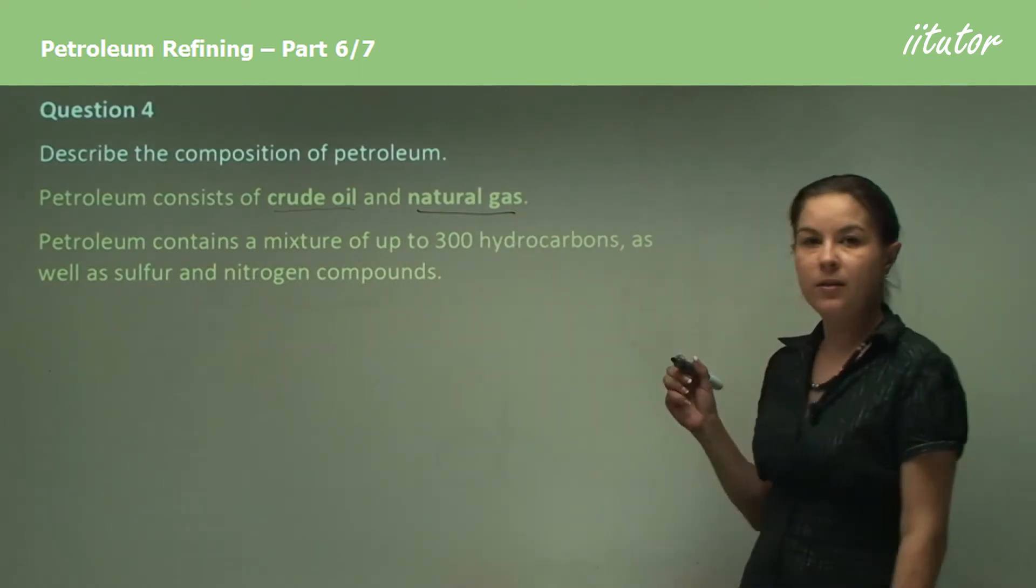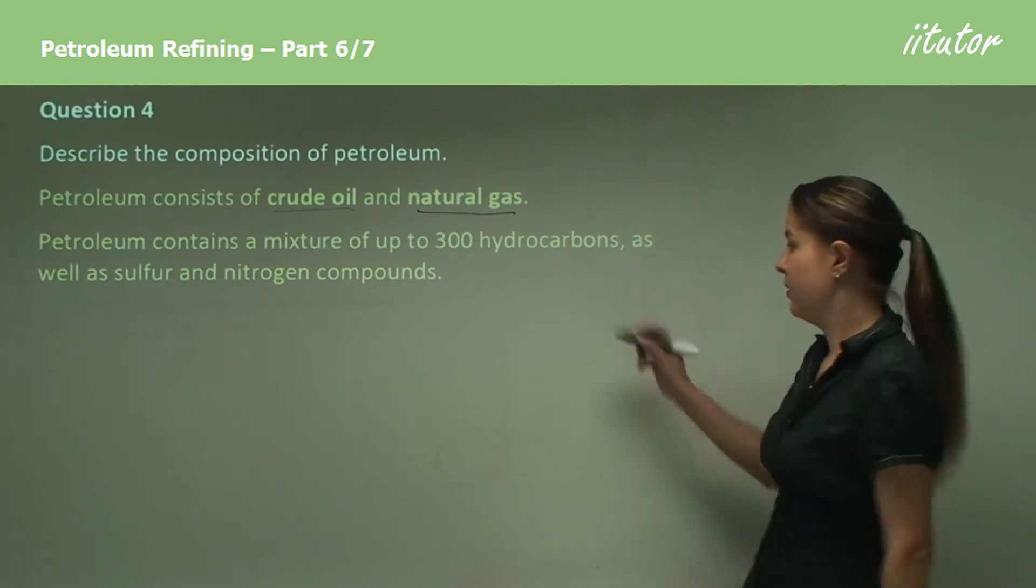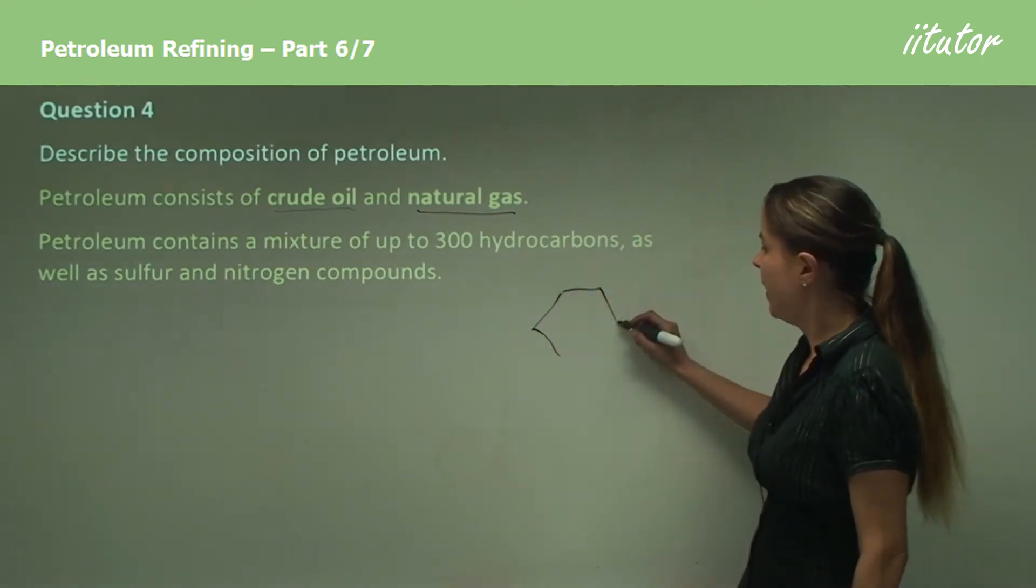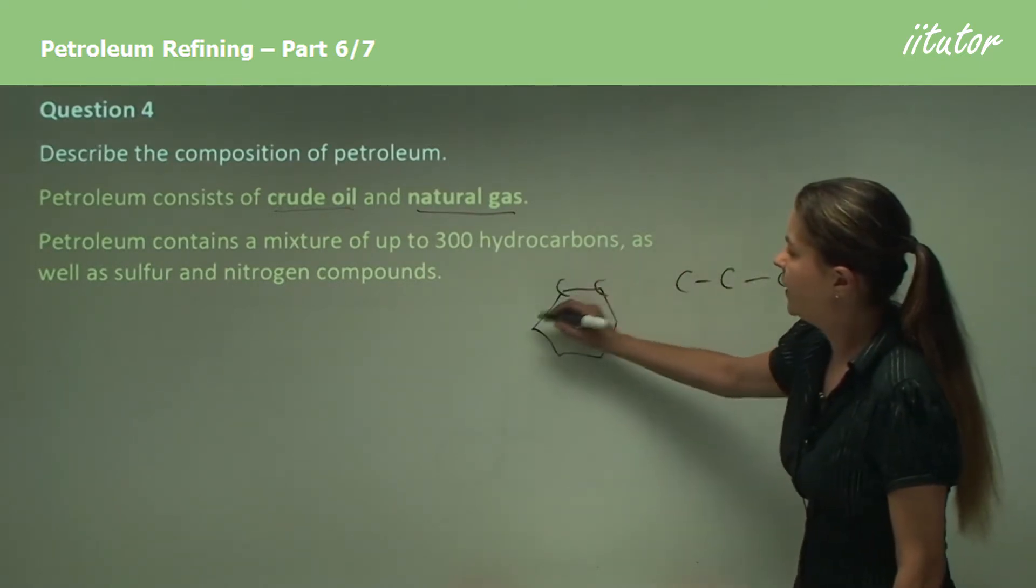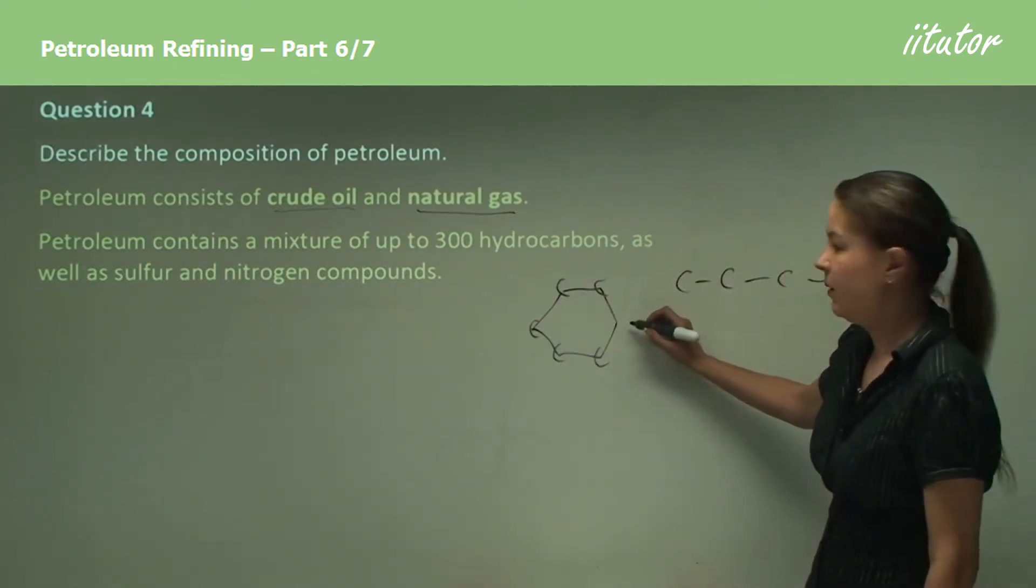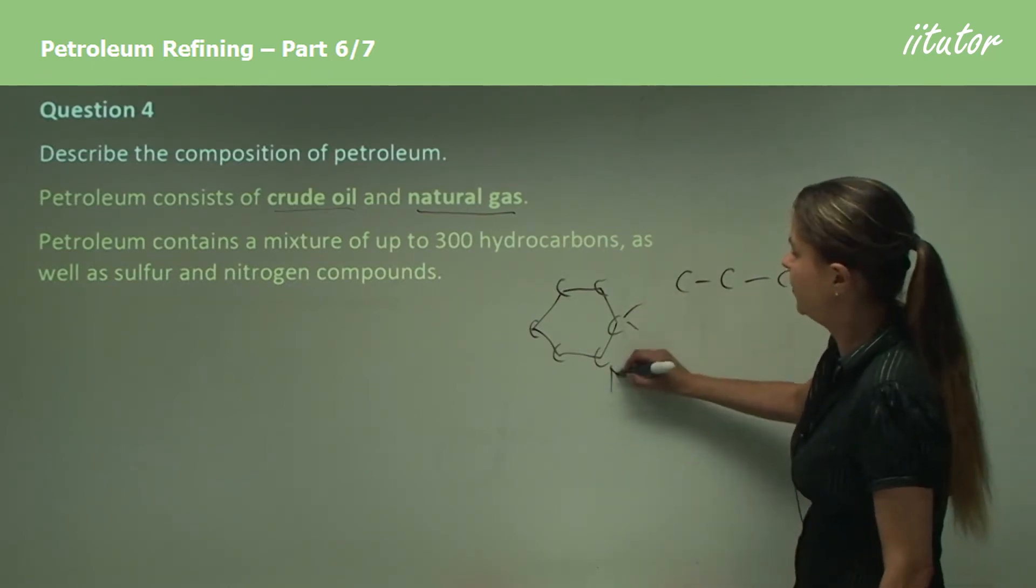And in these 300 hydrocarbons, it also contains what we call cycloalkanes, which are alkanes instead of being in a line like this, they're actually in rings, like this one here, which is a basic diagram for cyclohexane with its hydrogens, of course.